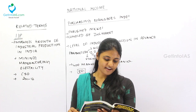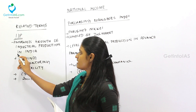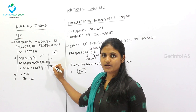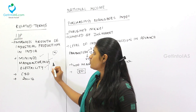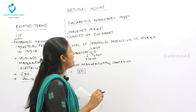The Index of Industrial Production (IIP) measures the growth of industrial production in India. Under IIP, there are three main industrial units: mining, manufacturing, and electricity. The IIP is calculated by the Central Statistical Office and the base year for IIP is 2011-12.